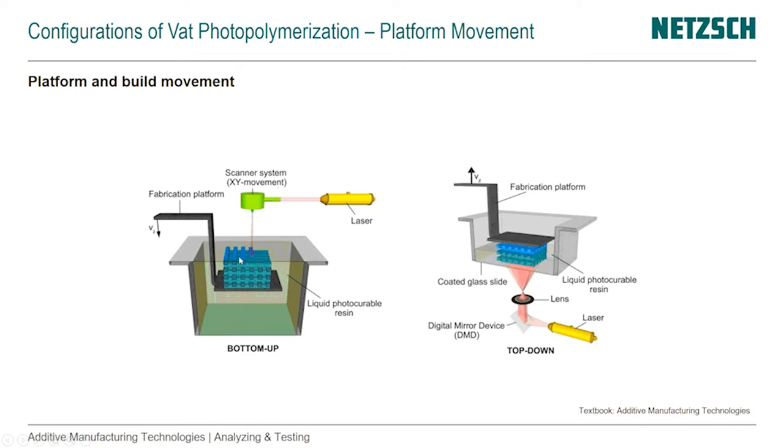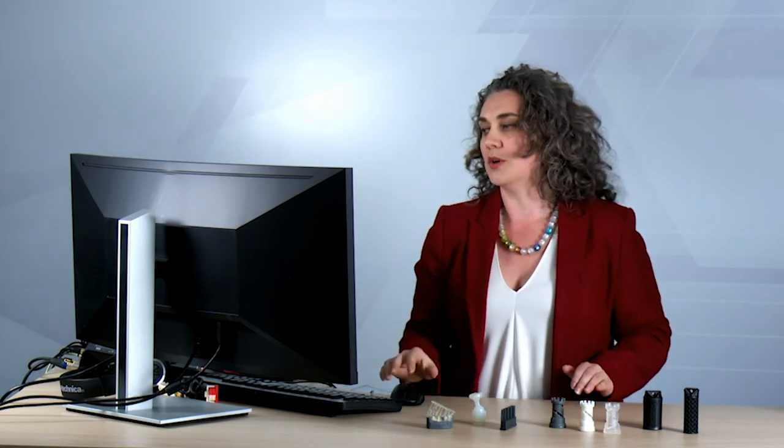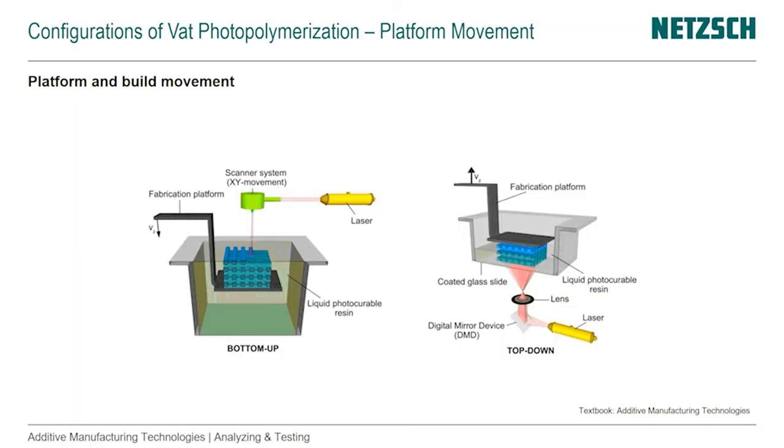and the 3D part as it's being built is submerged into the VAT. The other approach is moving that upside down, where we have the platform moving from the bottom of the VAT upwards, and the part is hanging by gravity on the build platform, and the exposure is done from the bottom.